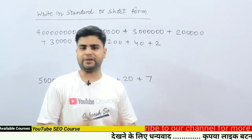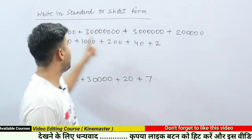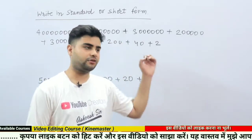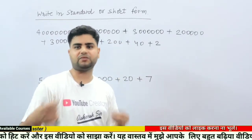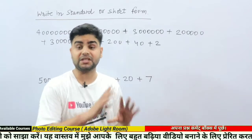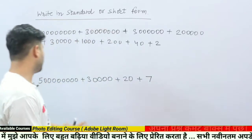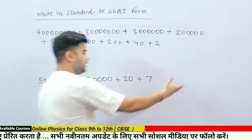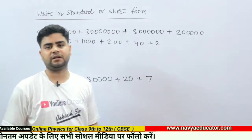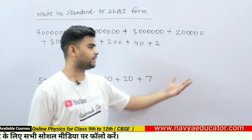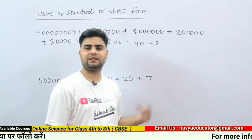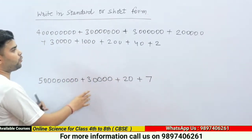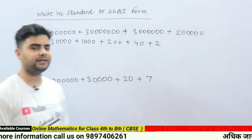The first method is very simple: add all these numbers and write down the answer here. This will be the short or standard form. You just add this number, this number, this number, this number, and write down the answer here. The result will be the standard form.